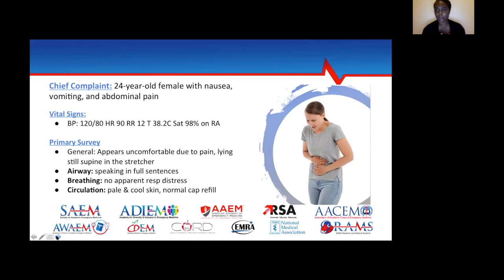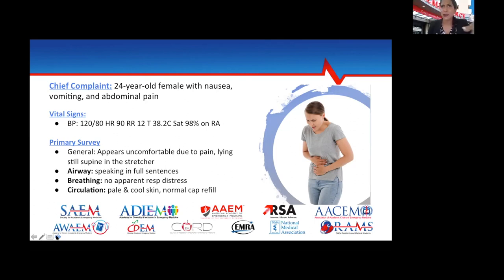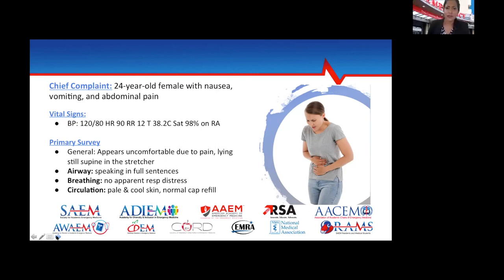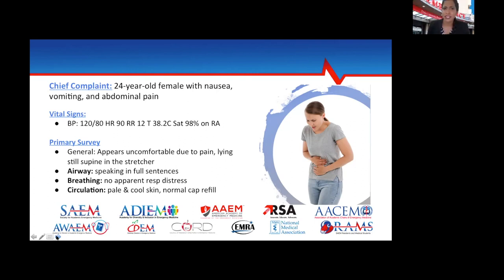Starting with history: when did the abdominal pain start? She says it started about three days ago but has gotten really worse over the last couple of hours and it's hard to move because of the pain. It's particularly worse when moving around. The pain is located down on the right side — before it was all over, but now it's really just on the right side. It's a dull but severe pain, and it's now constant. She also has nausea that started today, hasn't been eating much, feels like she's going to throw up but nothing is coming up.